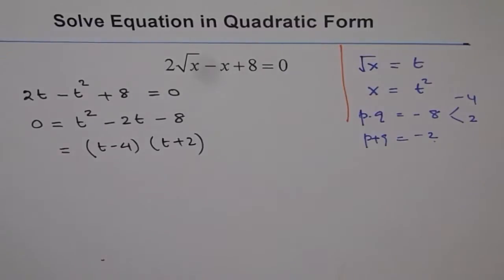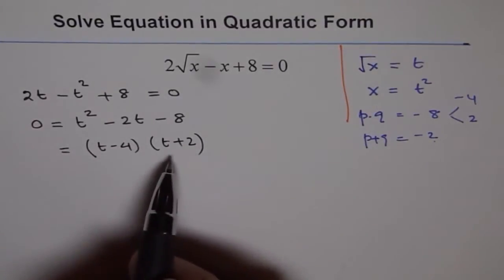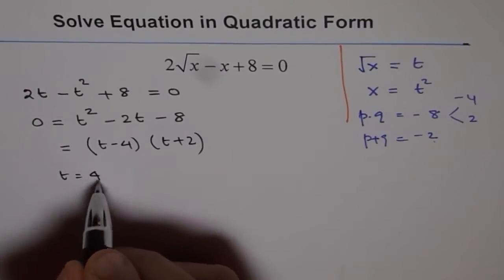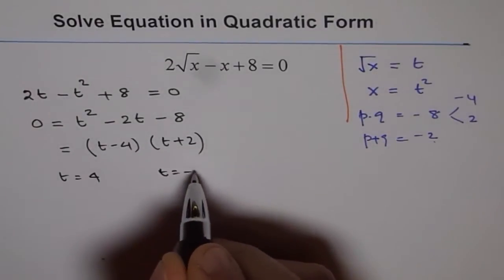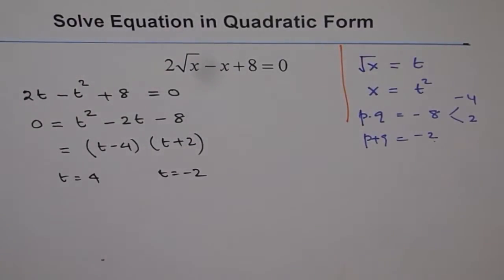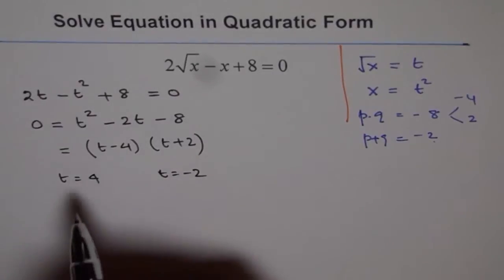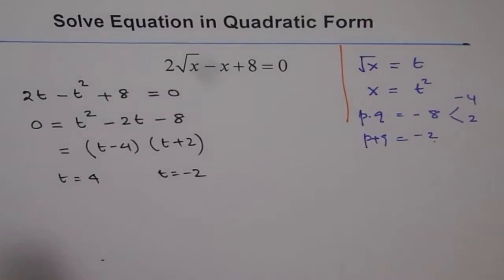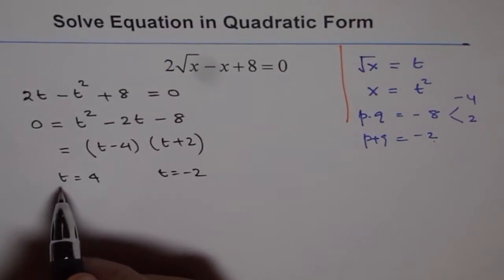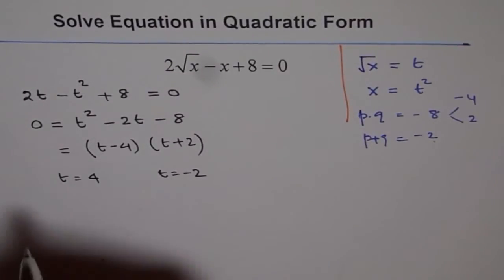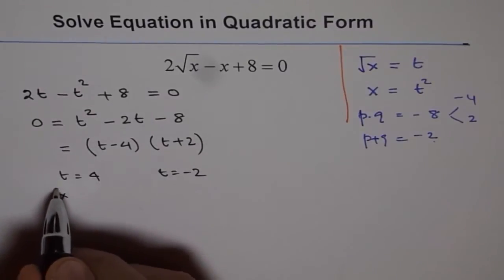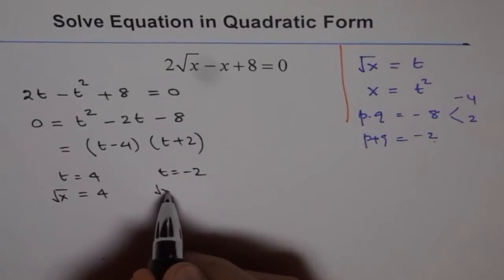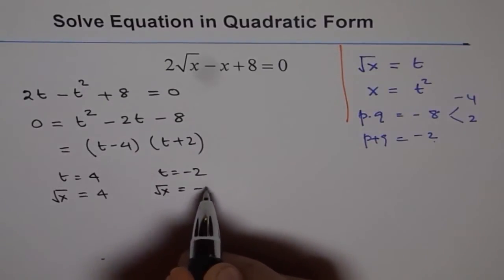So that's what we get. Now this could be 0 for t equals to 4 or for t equals to minus 2, correct? Both will give us the answer. But we are really interested in finding what x is. But t is square root of x, right? So we can substitute instead of t, square root of x. So let's do that. So we get square root of x is equals to 4 or square root of x is equals to minus 2.